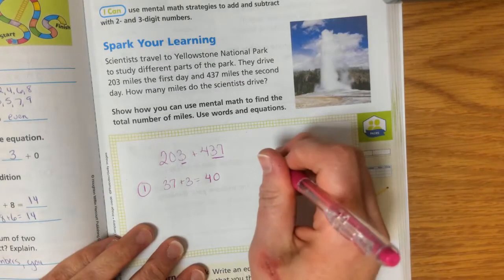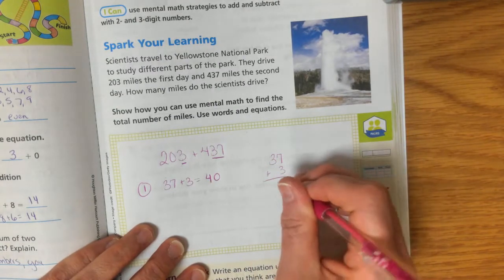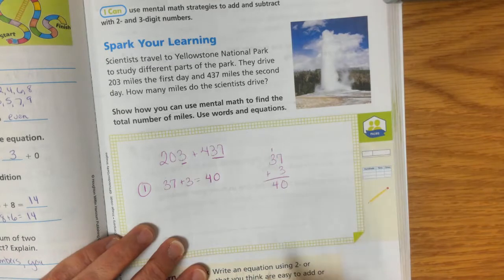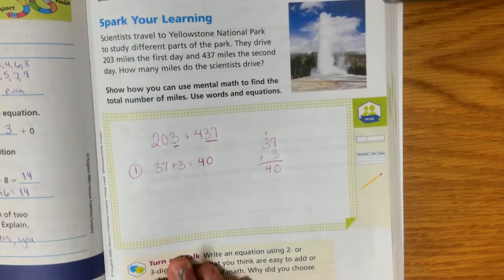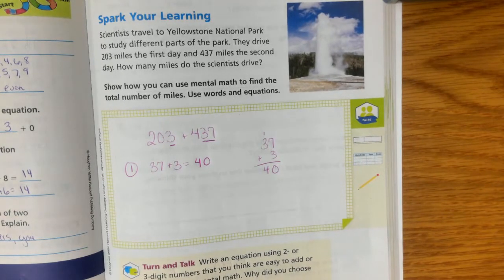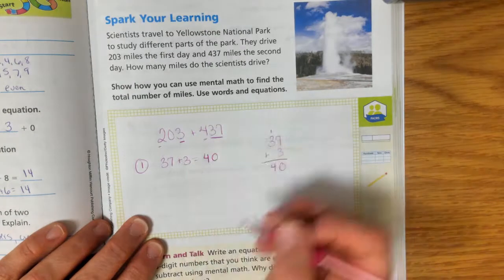I can see that if I were to do that over here, 7 plus 3, regroup my 1, I get 40. But I can do that all in my head. I don't need to write that part down. But if you do, that's okay. I'm just showing you a strategy that you can use.